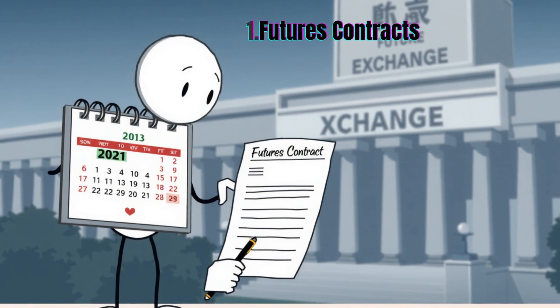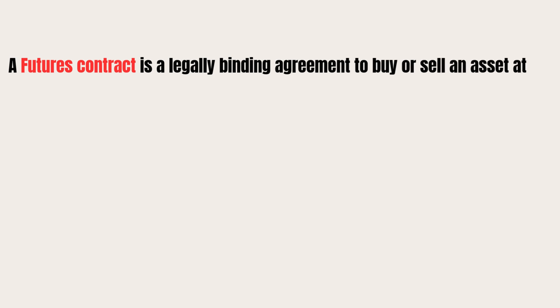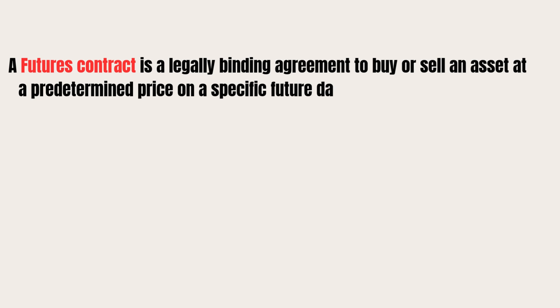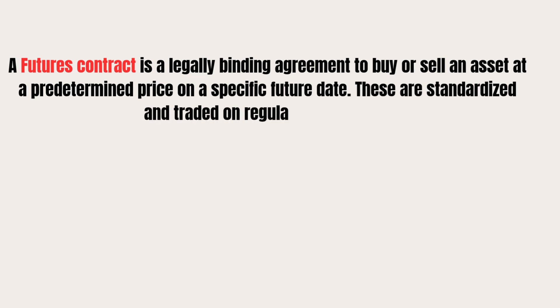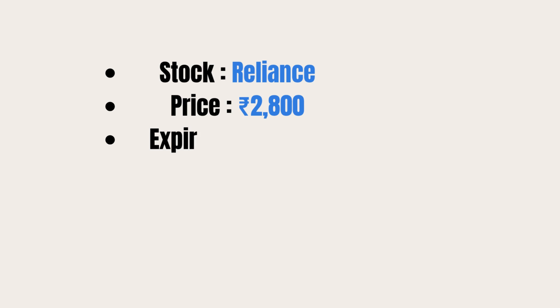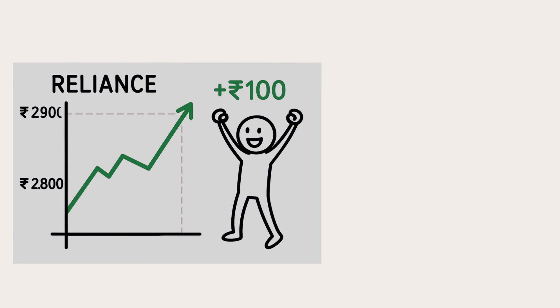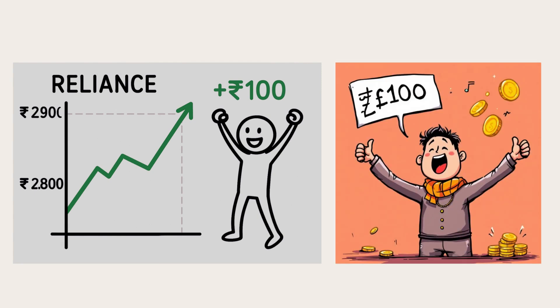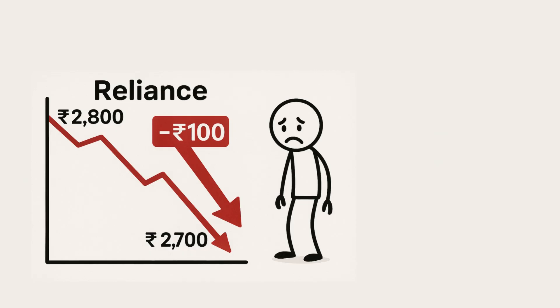Futures contracts: a futures contract is a legally binding agreement to buy or sell an asset at a predetermined price on a specific future date. These are standardized and traded on regulated exchanges. For example, suppose an investor believes the share price of Reliance Industries will rise. They buy a Reliance Futures contract at ₹2,800 for expiry next month. If the price increases to ₹2,900, the investor profits from the difference. If the price drops, they incur a loss. Since it's a binding agreement, both parties must fulfill the contract at expiry.